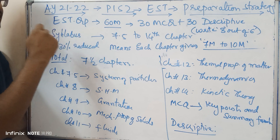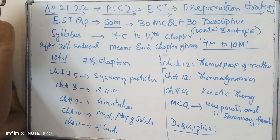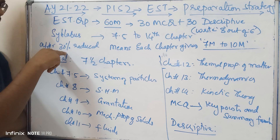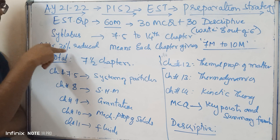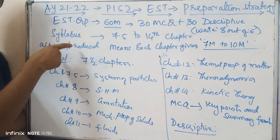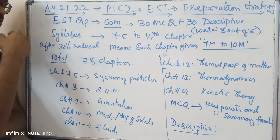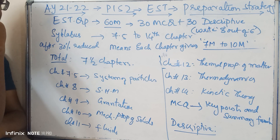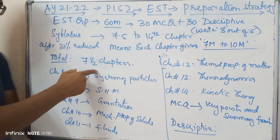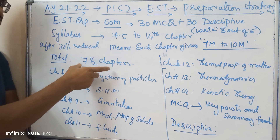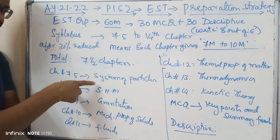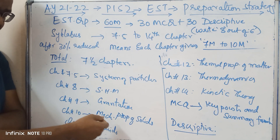The syllabus covers from chapter 7.5 to the end of chapter 14, and we are following the 30% reduction syllabus. You might already know what content is removed from each chapter; if not, I can provide you the link in this video to check the 30% reduced syllabus. Altogether we have seven and a half chapters — from chapter 8 to chapter 14 plus the 7.5 chapter on systems of particles. The chapters include gravitation and mechanical properties.